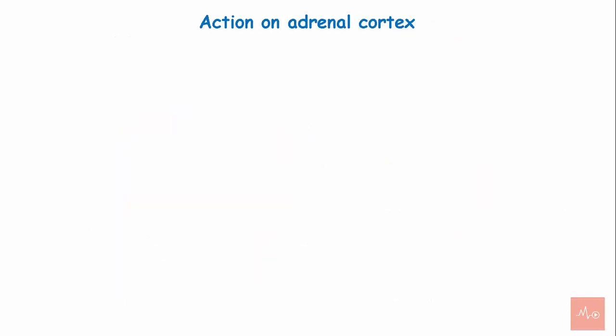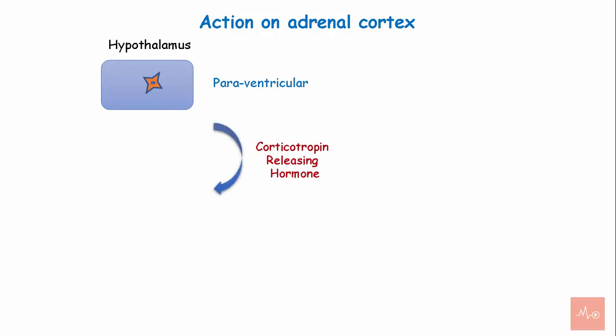Action on the adrenal cortex. Stimulation of the paraventricular nucleus of the hypothalamus by factors like emotion, stress, and trauma causes increased secretion of corticotropin releasing hormone.